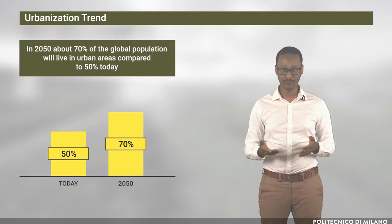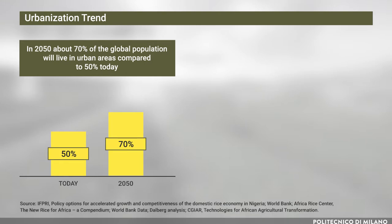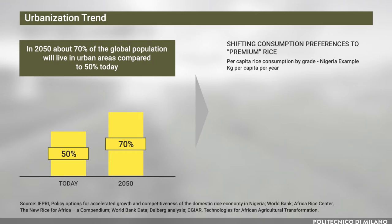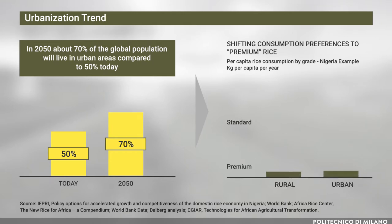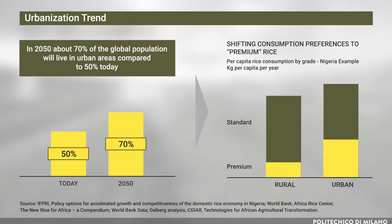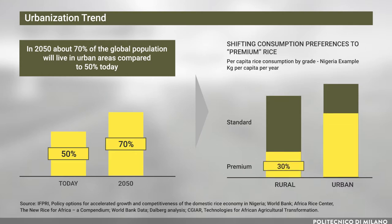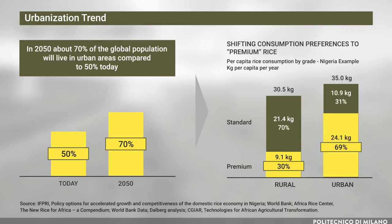For example, as reported by the International Food Policy Research Institute, per capita rice consumption habits in Nigeria vary greatly between rural and urban areas, with only 30% premium rice consumed in rural areas compared to 69% in urban areas. Transforming the agricultural sector can positively contribute to the empowerment of rural communities, slowing down the trend of people leaving rural areas for urban cities, while securing a sustainable increase in their income.